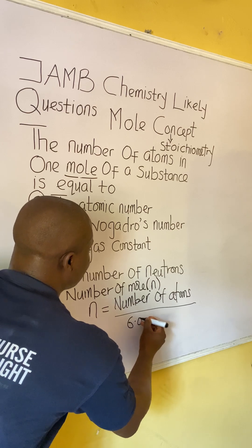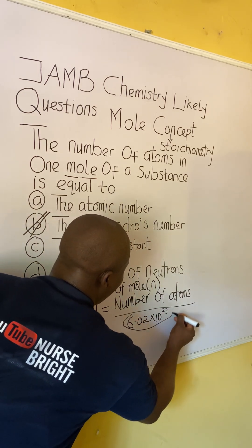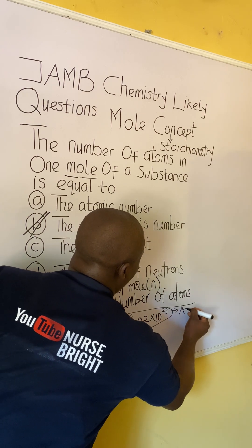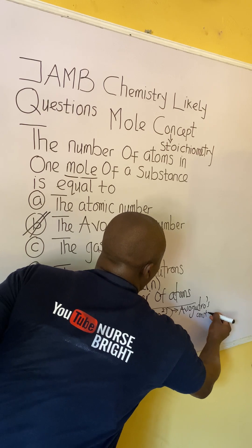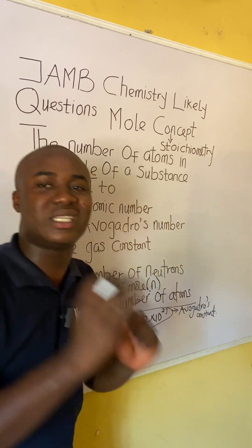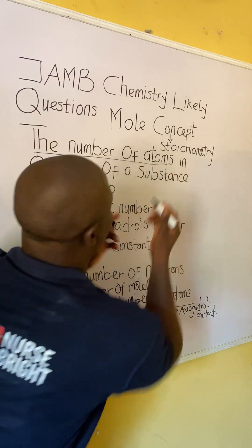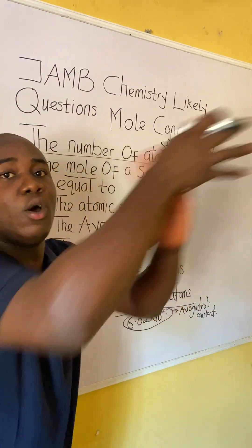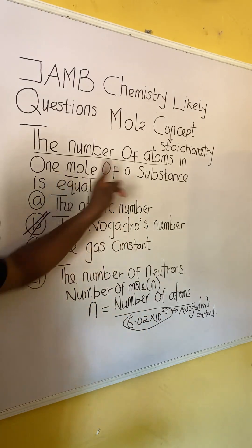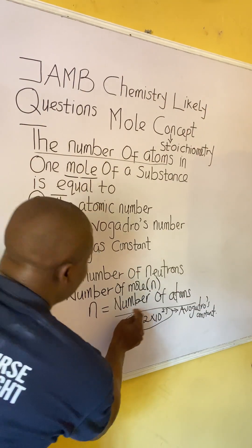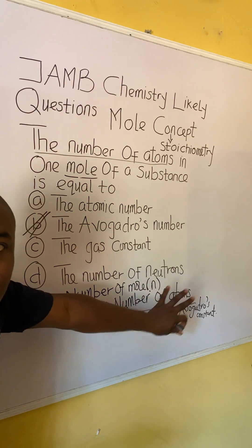From this question, they are asking for the number of atoms. When they say 'the number of something,' it means: what is that thing? The number of atoms in one mole of a substance is what? So the number of atoms means we are to make number of atoms the subject of the formula in this particular question.